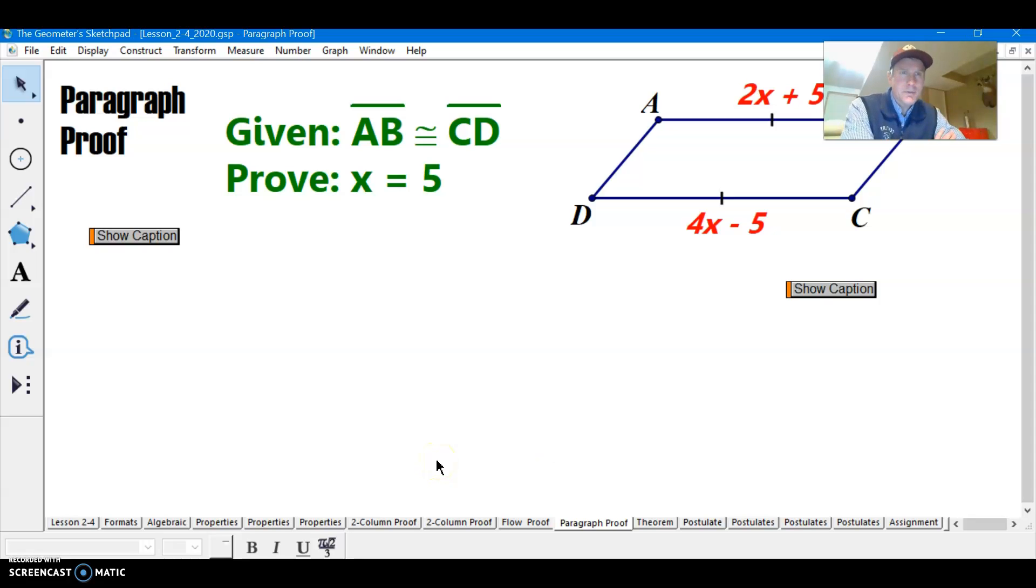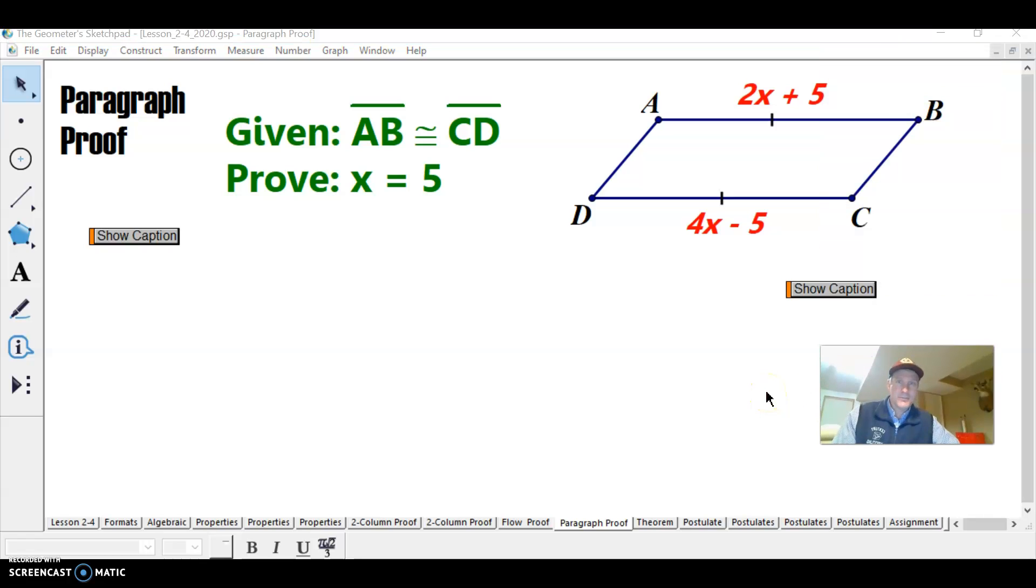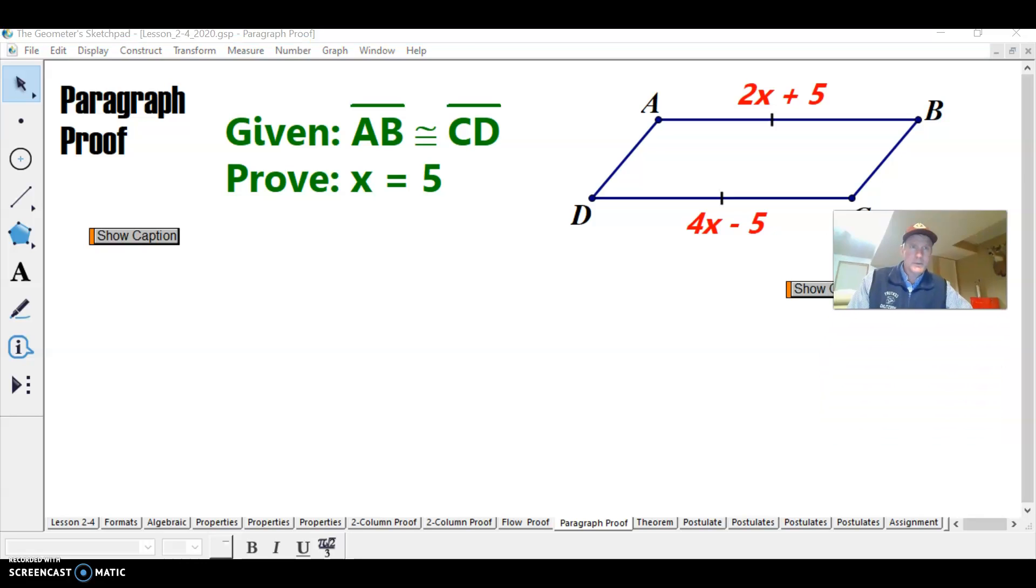Now a paragraph proof. So basically, a paragraph proof, you just are going to write out an explanation. You're given segment AB, the segment is congruent to segment CD, and this little tick mark means one same number of tick marks on each one. That means they are congruent. So that's what you're given. So that's what you're going to start your sentence with. So what does congruent mean? Same size, same shape. Congruent means same size and same shape.